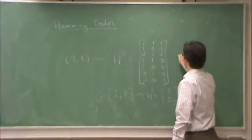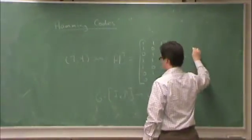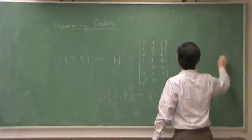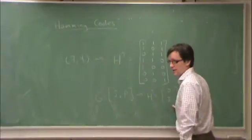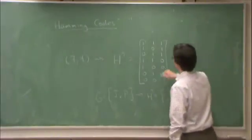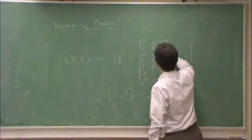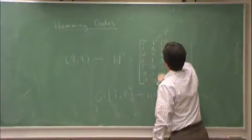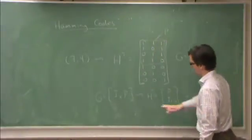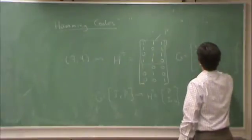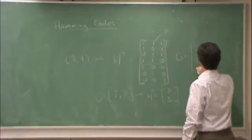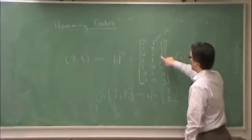From this, G—now notice this is already H transpose, so that's P IN-K, so this here is P. So G contains the identity matrix of order 4, and P.